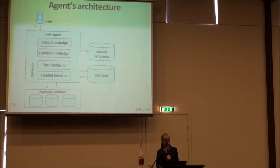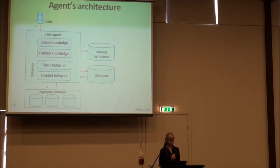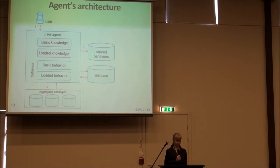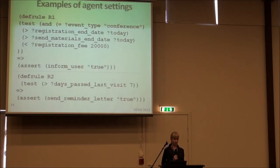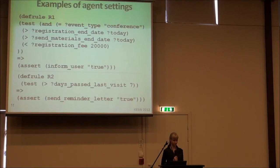Looking at the agent's architecture: the user sends a request for information to the user agent, which has its basic knowledge and behaviors. To add new functionality, the user chooses certified behavior from a shared behavior database and creates a rule-based unit. The user may utilize existing rules or load and execute new ones. In this way, the agent gains new knowledge and behaviors. One of the main advantages of this agent approach is the possibility of customizing the agent's behavior by adding rules without changing the application code.